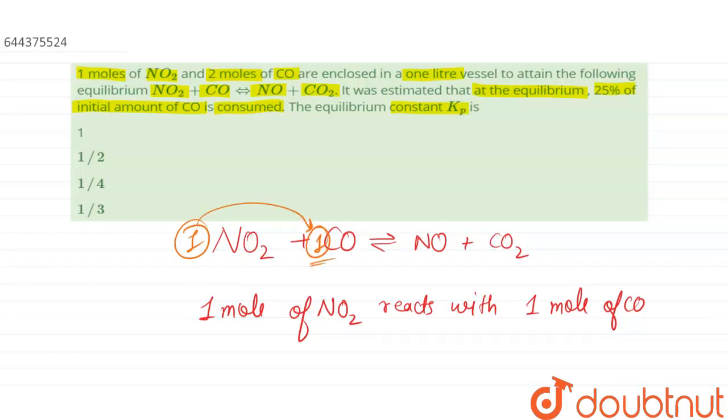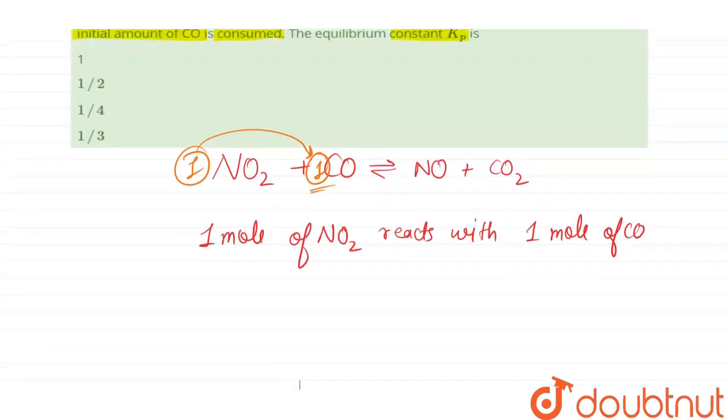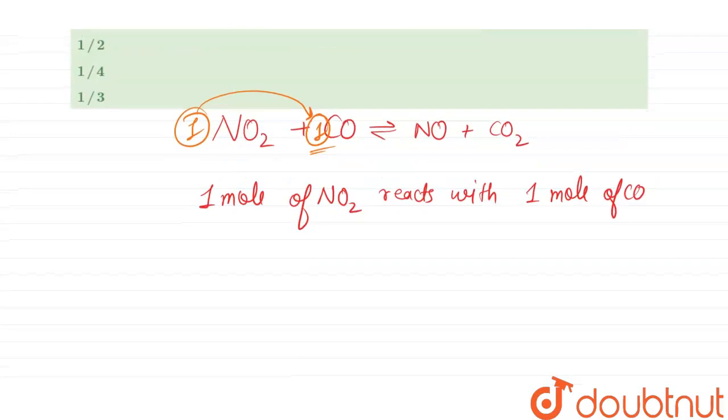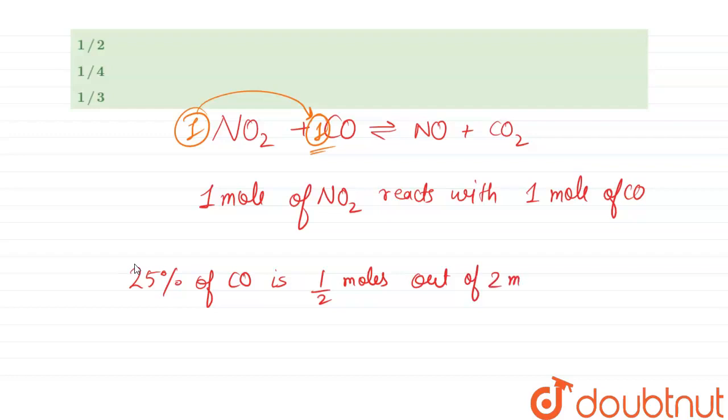Thus, 25% of CO is half moles out of two moles. So 25% of carbon monoxide is 0.5 moles out of two moles, as given in the question.